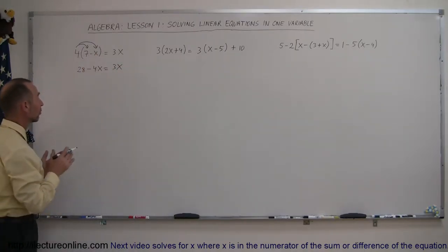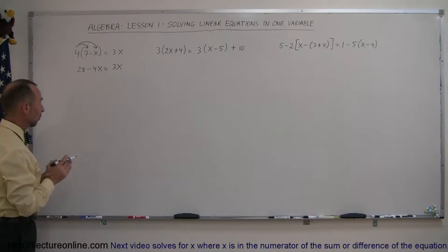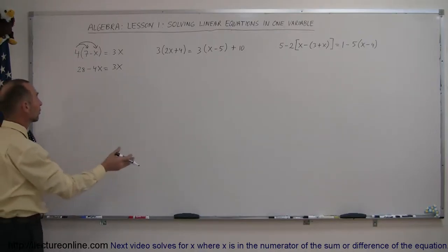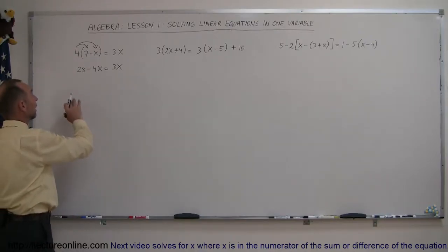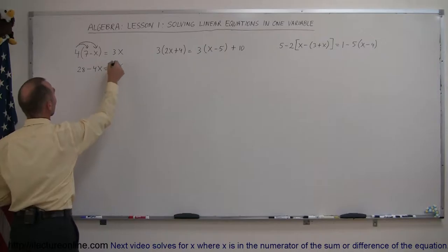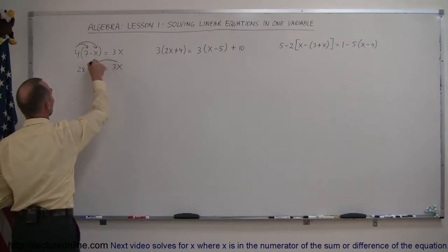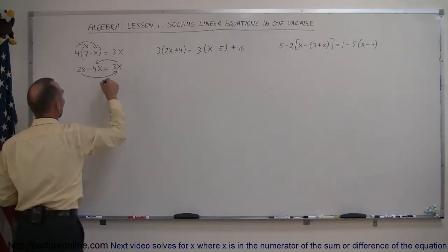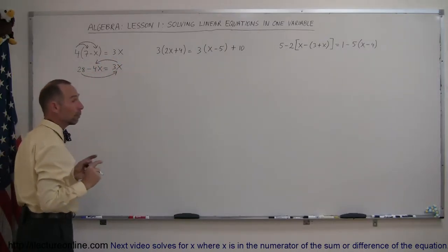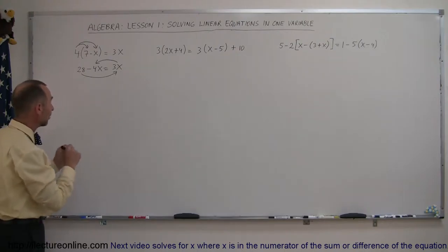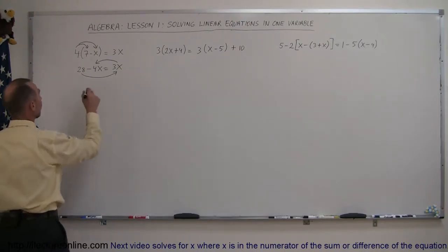Now we follow the original steps we learned before. We're going to move all the terms with an x to one side and everything else to the other side. So the 3x goes to the left, the 28 goes to the right of the equal sign, remembering that when you cross the equal sign, the sign changes.